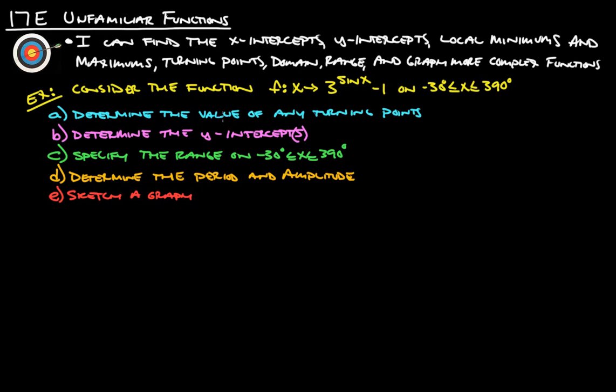And then we're going to determine the turning points. And again, the turning point is basically a minimum or a maximum. It's whenever the graph stops going up and starts going down or when the graph stops going down and starts going up. We'll figure out the y-intercepts, specify the range from negative 30 to 390, and then determine the period and the amplitude and then also sketch a graph.